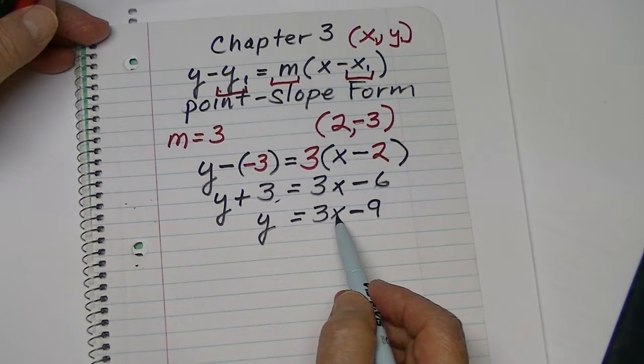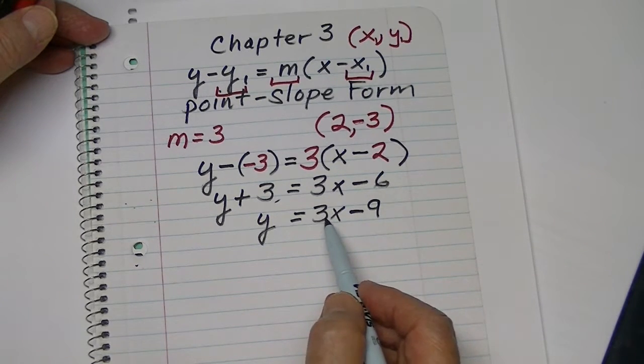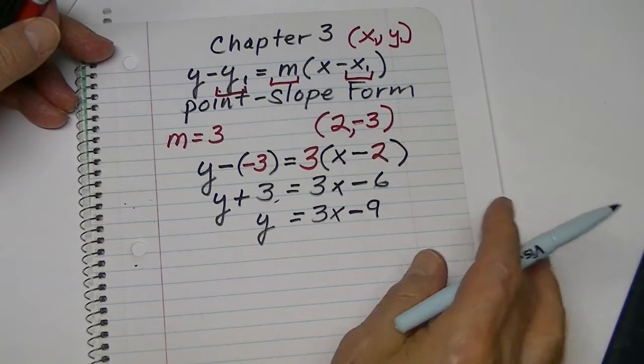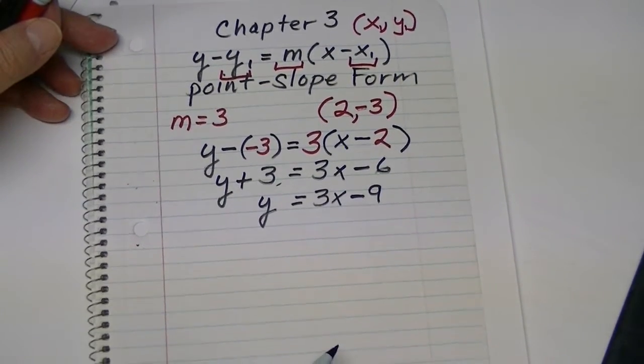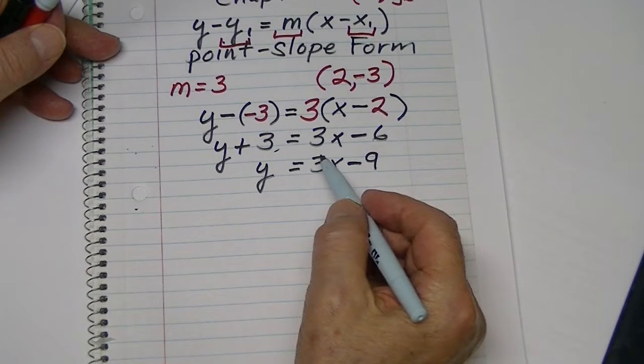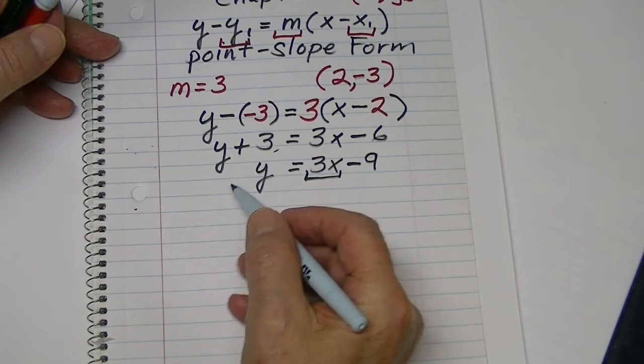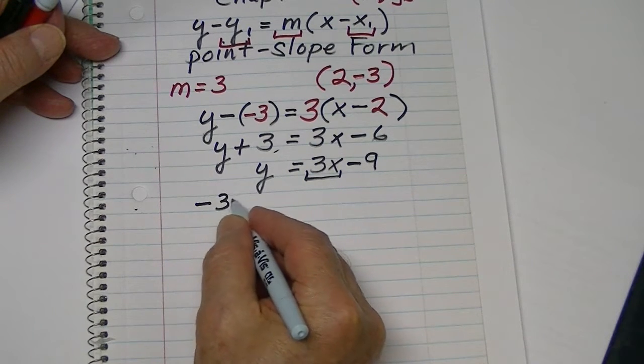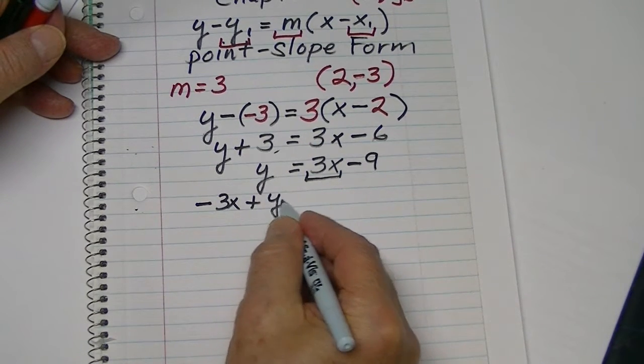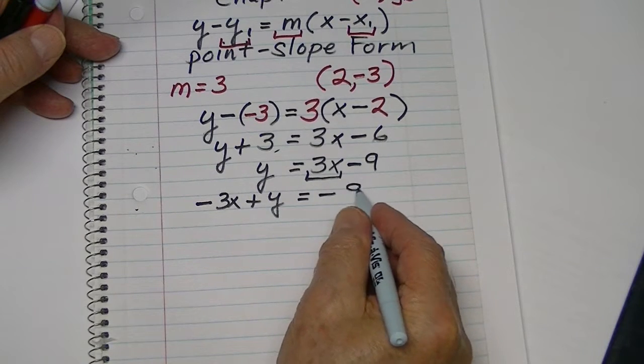But, suppose they asked you to put it in standard form. Well, in standard form, all we need to do is take this term, transpose it to the other side. It becomes a negative 3X plus Y equals a negative 9.